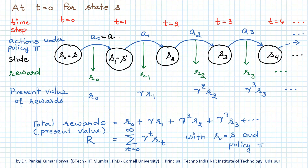What it says is that if at any given point in time we are at a particular state — say we are in state S2 — then our optimal policy at this state S2 does not depend on the earlier actions that we have taken and the earlier states in which we have been. All that matters for our optimal policy in state S2 is that all our future actions should be optimal. In other words, given our present state, we do not care about our past actions and past states when we want to find the optimal policy.